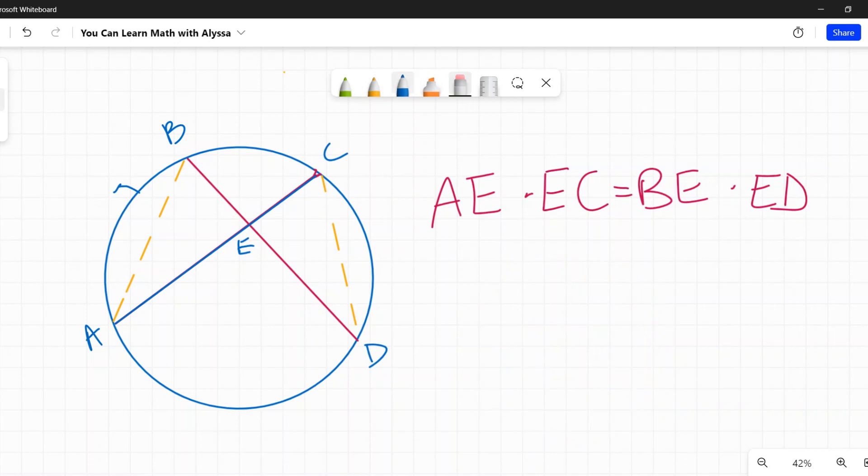All right, now let's look over here. I have this arc AD. And there are two different angles that are intercepting it. I have ABD that's intercepting it, and I also have ACD that's intercepting it. Because they are both intercepting the same arc, they must be the same angles.